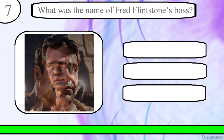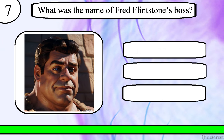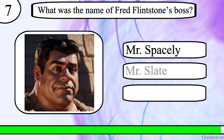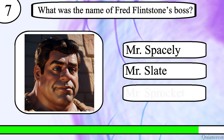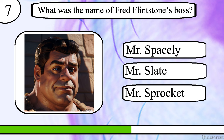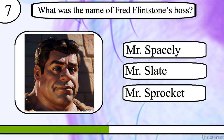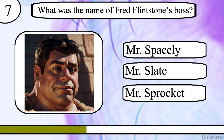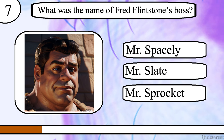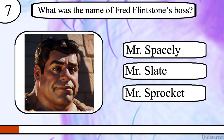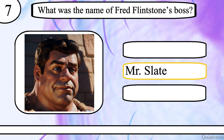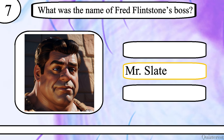Question 7. What was the name of Fred Flintstone's boss? Mr. Spacely, Mr. Slate or Mr. Sprocket? The correct answer is Mr. Slate.